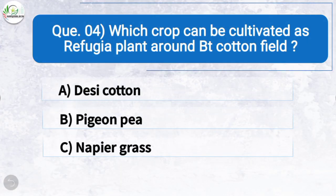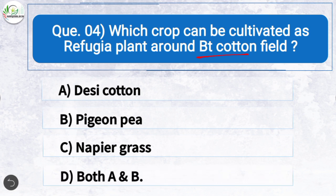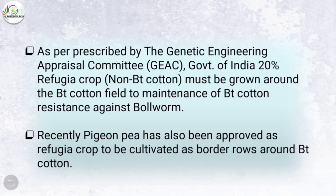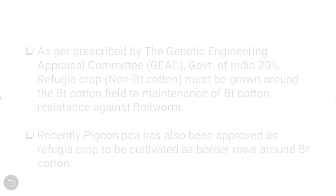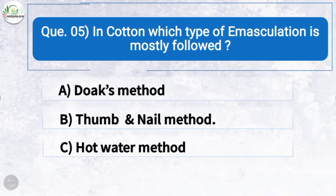Question four: Which crop can be cultivated as refugia plant around BT cotton field? The correct answer is option D: both desi cotton and pigeon pea. As prescribed by the Genetic Engineering Appraisal Committee (GEAC), Government of India, around 20% refugia crop (non-BT cotton) must be grown around the BT cotton field for maintenance of BT cotton resistance against ball worm. Recently, pigeon pea has also been approved as a refugia crop to be cultivated as a border row around BT cotton.